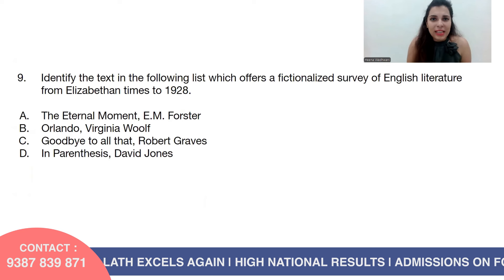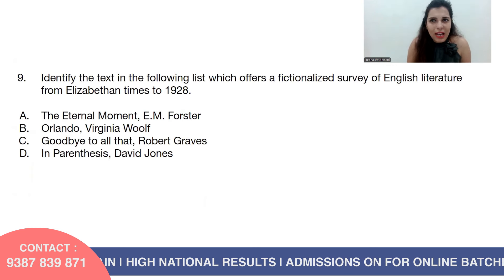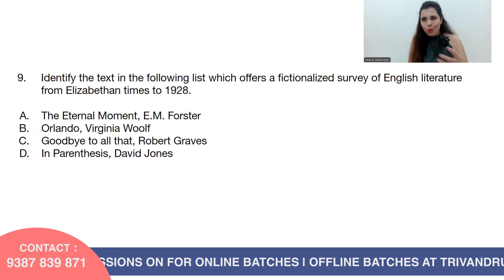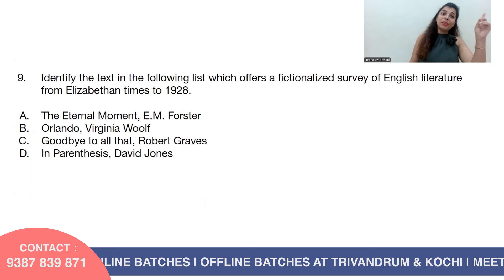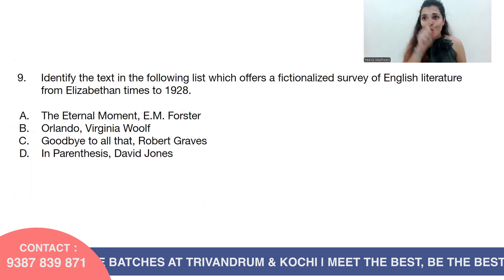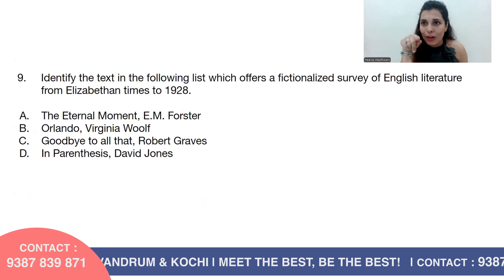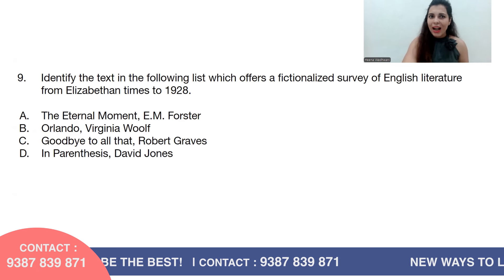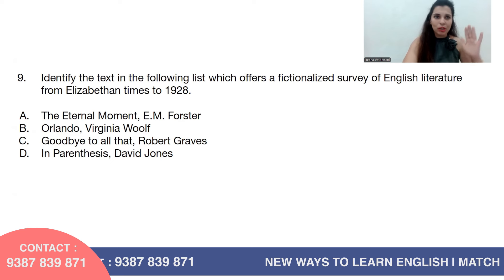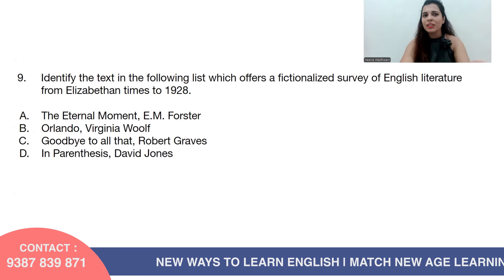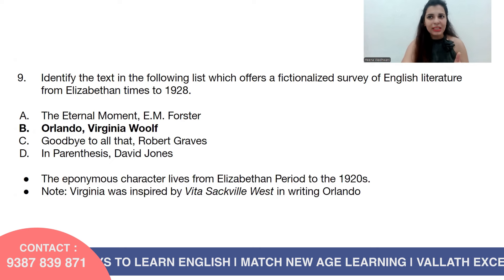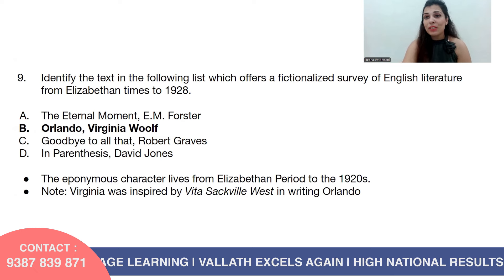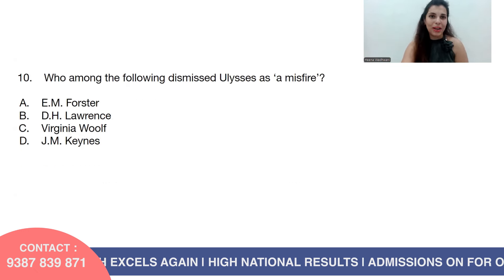Question number nine: Identify the text which offers a fictionalized survey of English literature from Elizabethan times to 1928. The character who lives through various generations is Orlando, so the answer is Orlando by Virginia Woolf. This is a past year question. The eponymous character Orlando lives from the Elizabethan period to the 1920s. Virginia Woolf was inspired by her girlfriend Vita Sackville-West in writing Orlando.